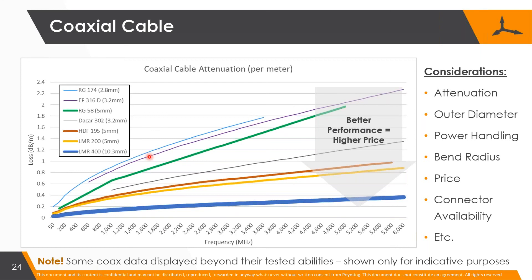You can use thin cables for smaller lengths or lower frequencies. If you find losses are high and want to go to lower losses, those cables are much thicker. Cable loss is typically related to the diameter of the coaxial cable, and cost increases as you want lower losses.